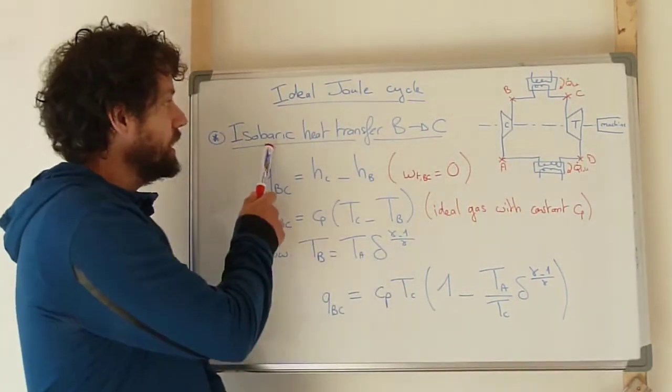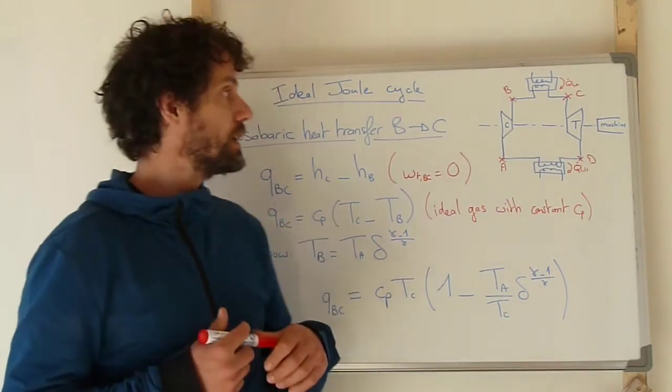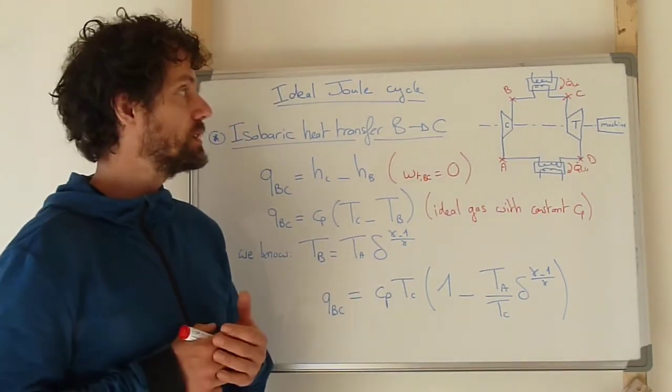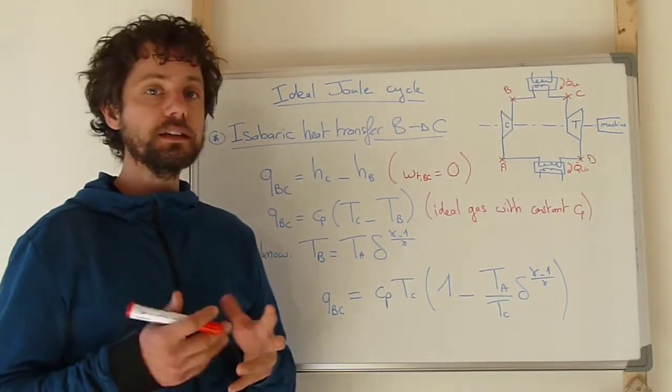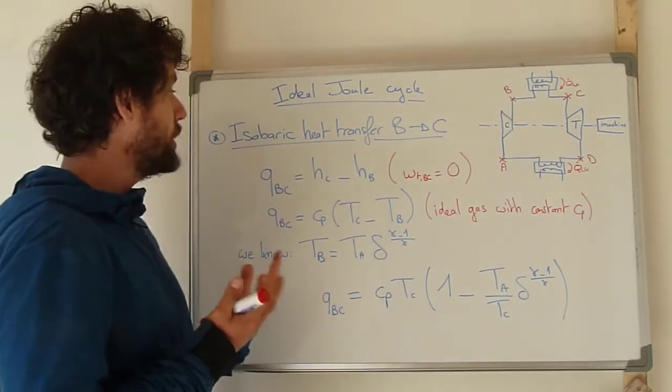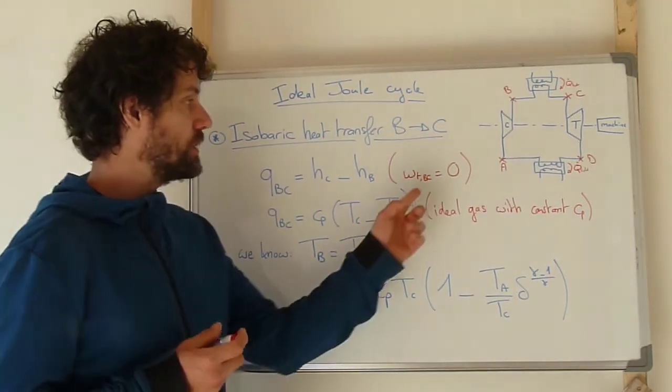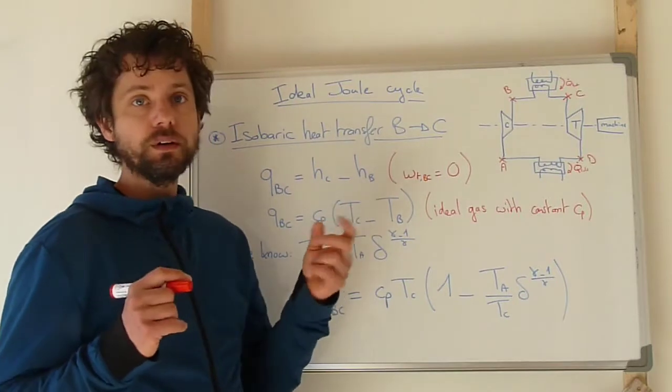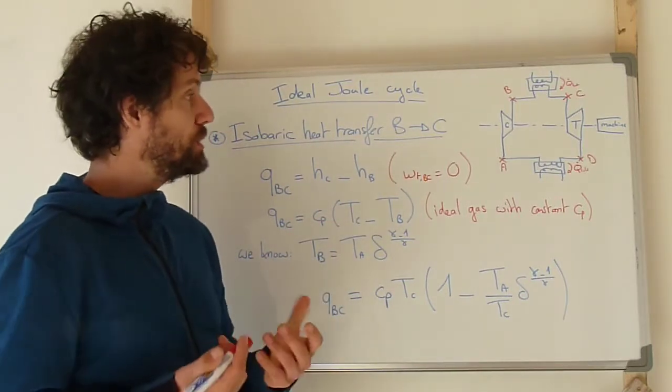This is an isobaric heat transfer because we can neglect the pressure losses, so we can consider that the pressure remains constant here in this heat exchanger. Then applying the first principle of thermodynamics, because there's no moving parts, there's also no technical work exchange between B and C.